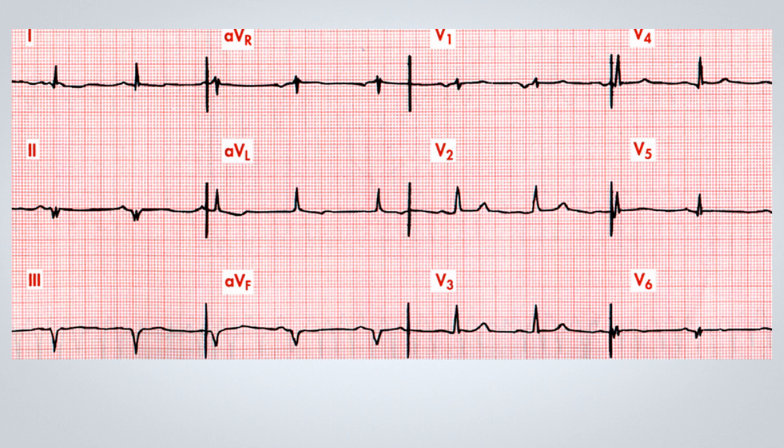Additionally, in V5 and V6, we notice a pathological Q wave in V6 and reduced QRS complex amplitude indicating necrosis in this area. Thus, although the patient is asymptomatic, the ECG indicates a history of a transmural anterior myocardial infarction affecting the entire inferior wall and part of the posterolateral region. We can define this as an old inferoposterolateral myocardial infarction.